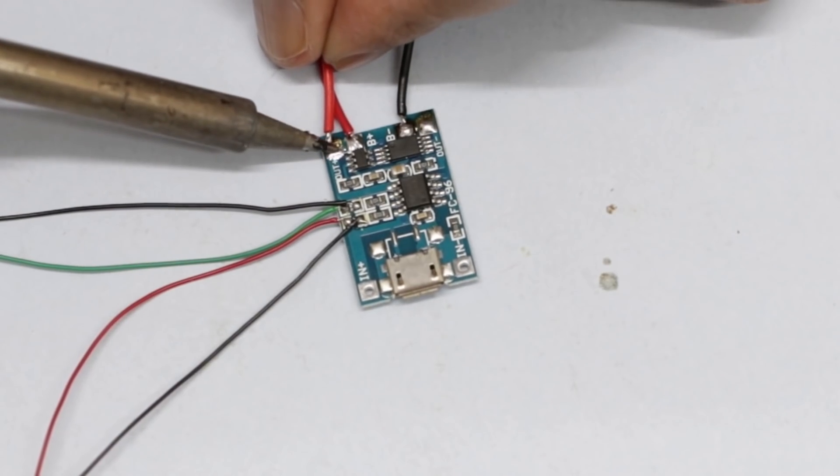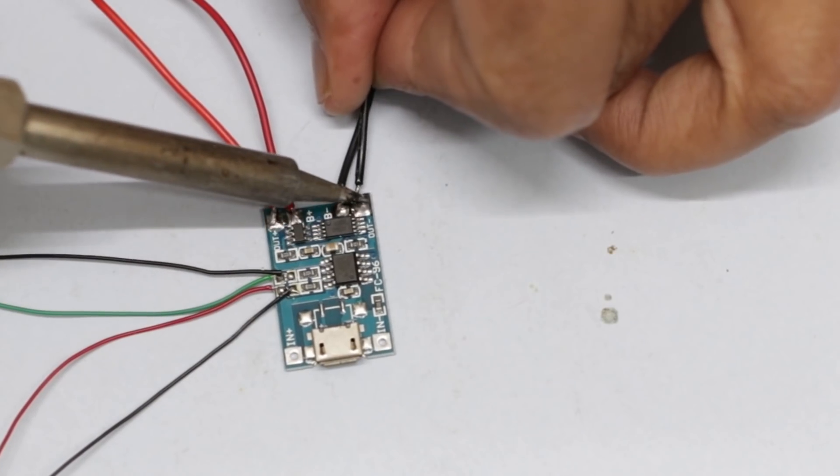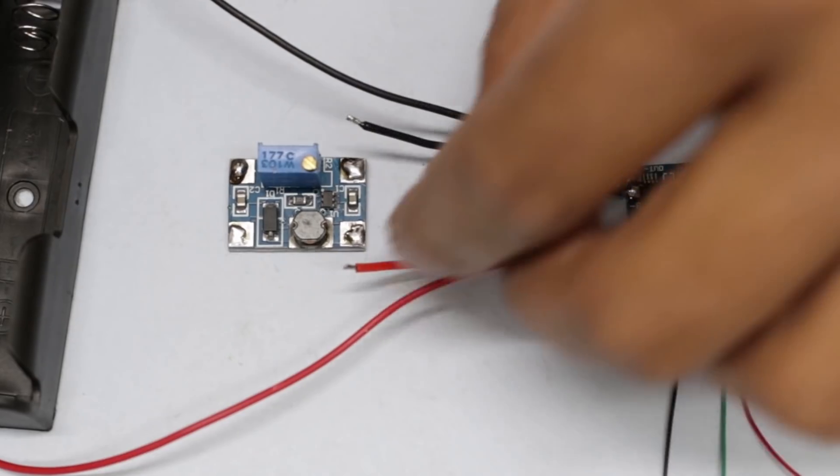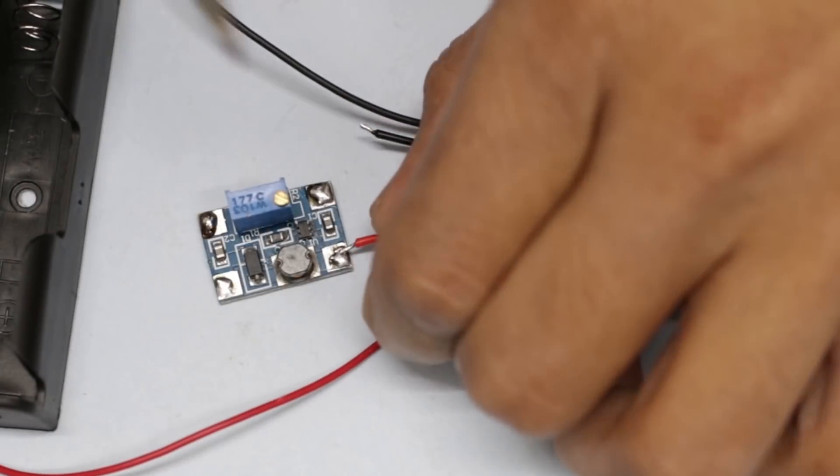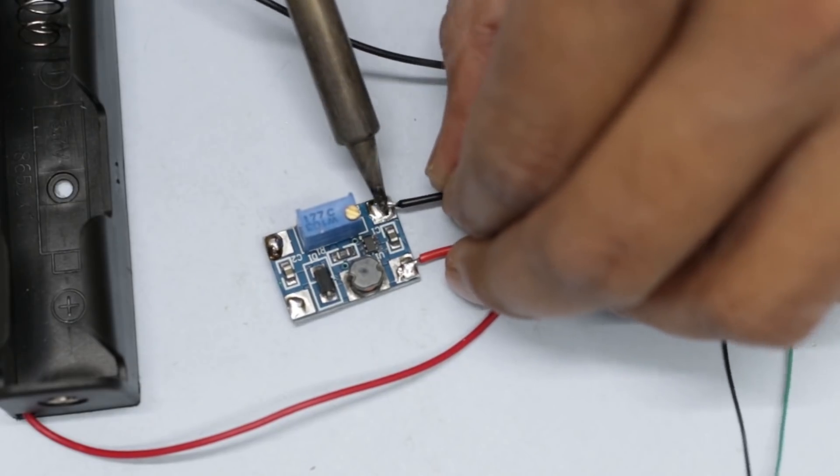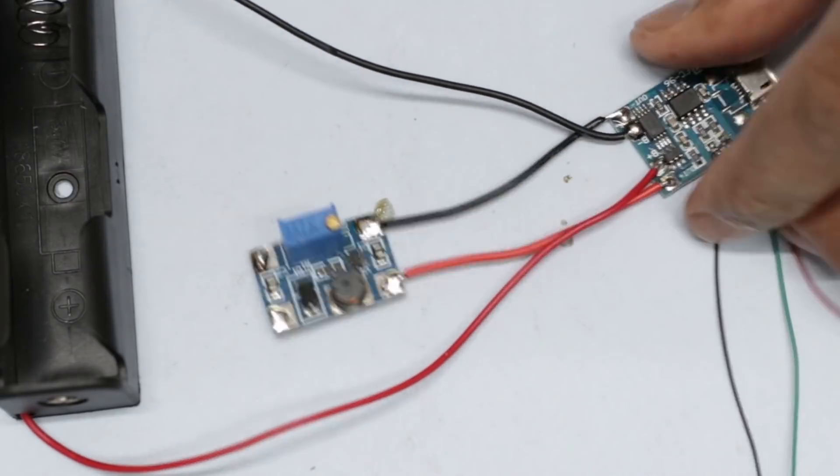Now connect the SX1308 boost converter to the TP4056. The VIN terminal is connected to out plus and ground is connected to out minus of the TP4056 module.